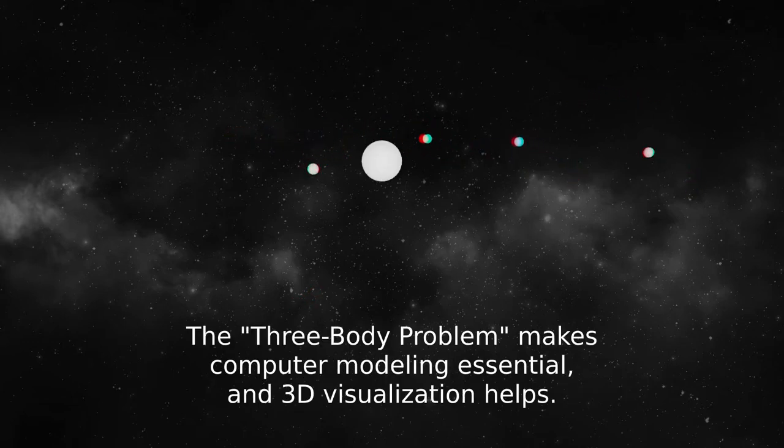This kind of computer modeling is how NASA and other agencies plan space missions because of something called the three-body problem. It turns out that any orbital problem with more than two bodies must be modeled just like this on a computer with many tests and adjustments. And this 3D rendering method helps people visualize outcomes and plan successful missions.